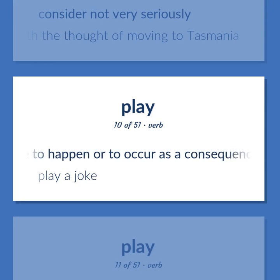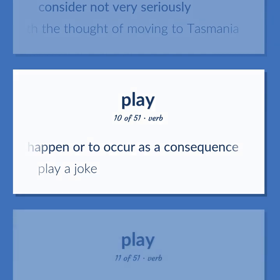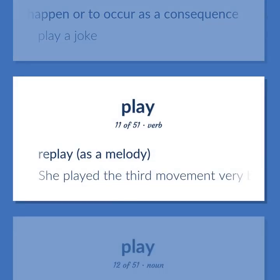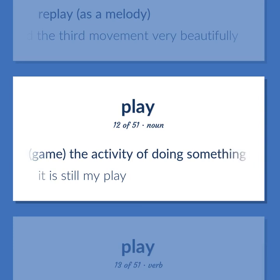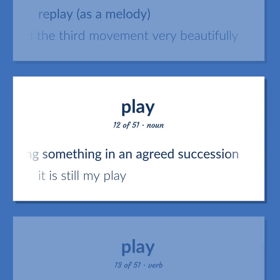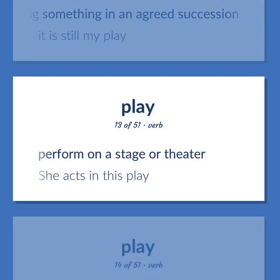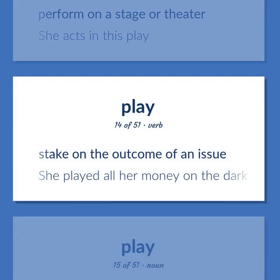Cause to happen or to occur as a consequence. Play a joke. Replay, as a melody. She played the third movement very beautifully. Game — the activity of doing something in an agreed succession. It is still my play. Perform on a stage or theater. She acts in this play. Stake on the outcome of an issue. She played all her money on the dark horse.